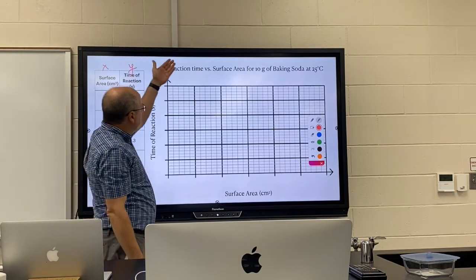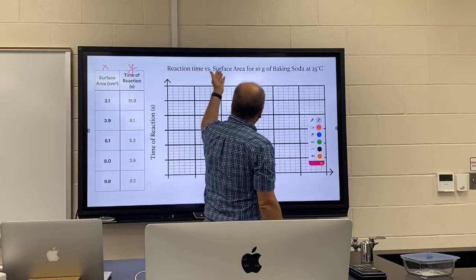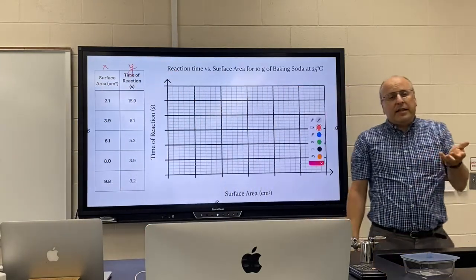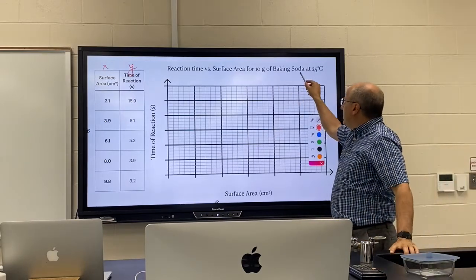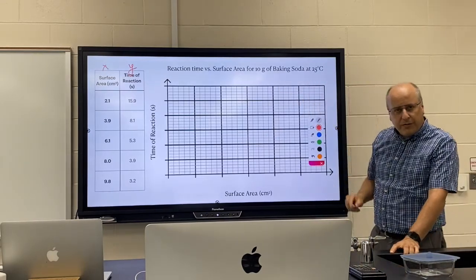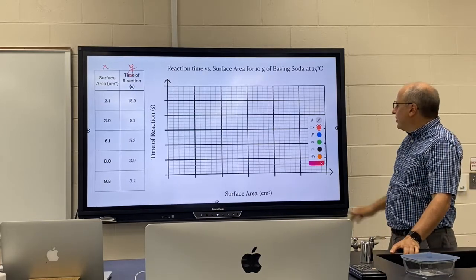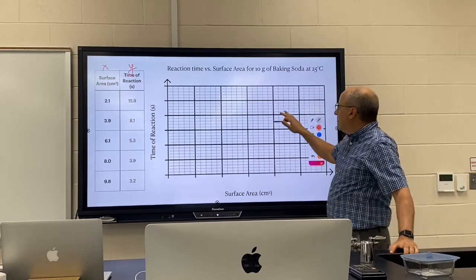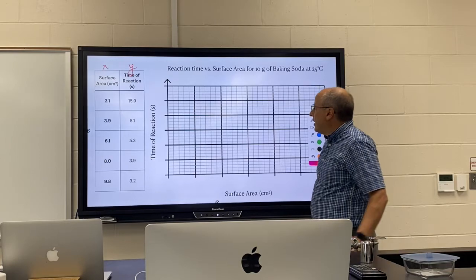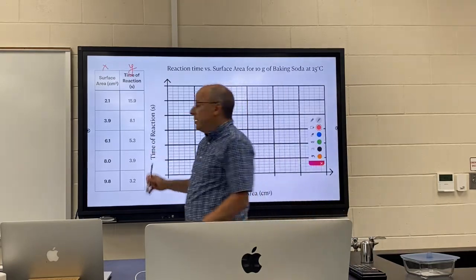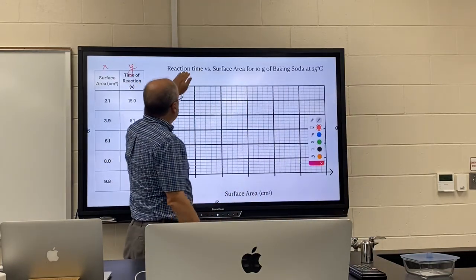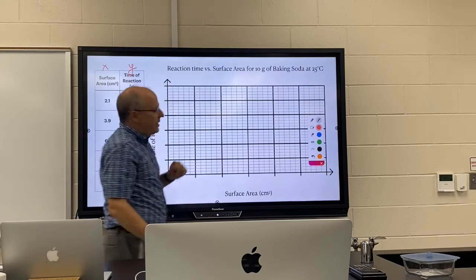For our independent variable, surface area. For the dependent variable, that's our time of reaction. And then the title would be reaction time versus surface area, the conditions are for 10 grams of baking soda at 25 degrees. Okay, so this lets the person know viewing the graph the conditions and what it is we're plotting. It's always y versus x, dependent versus independent.